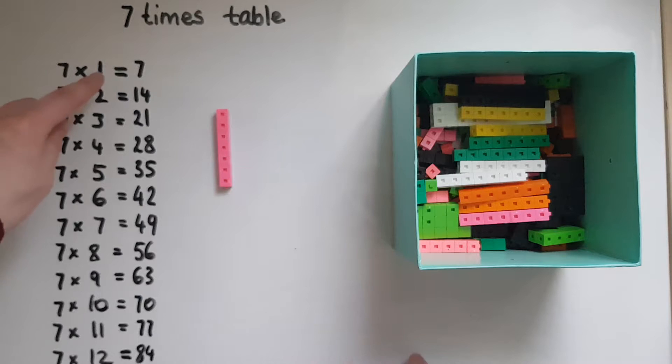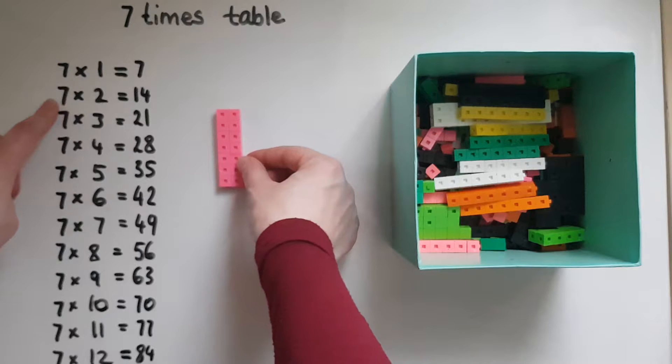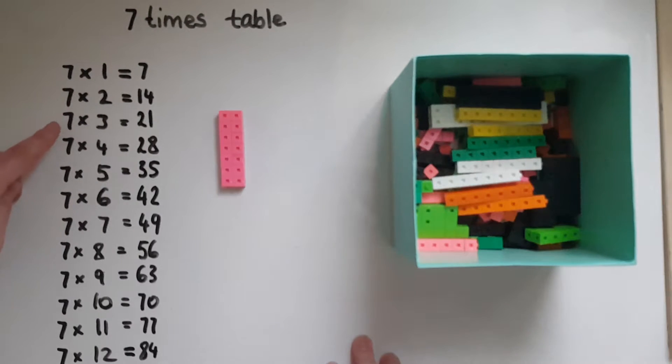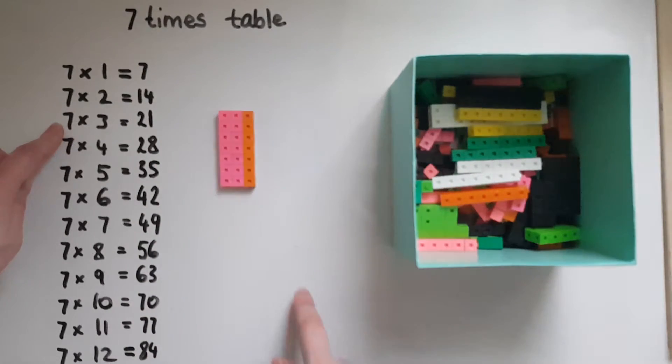So seven times one is seven. If I do this seven times and I get two cubes instead each time, then I'll end up with fourteen in total. And seven times three will give us twenty-one. So seven rows of three.